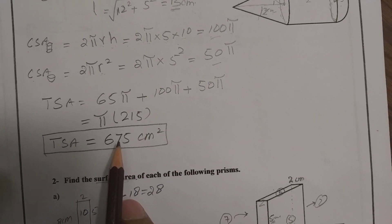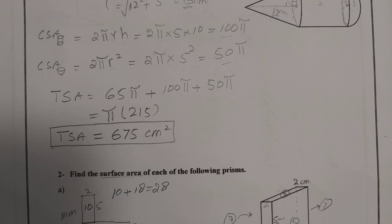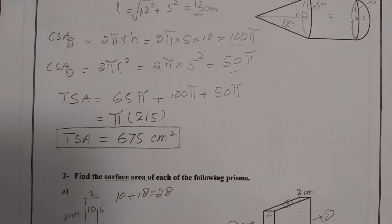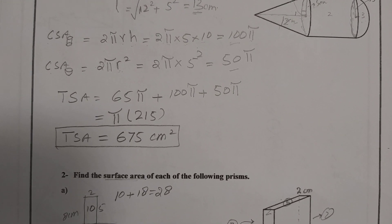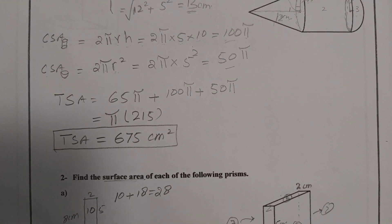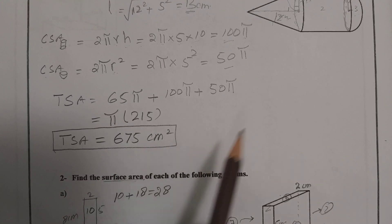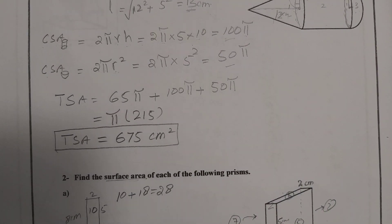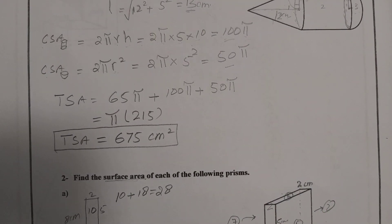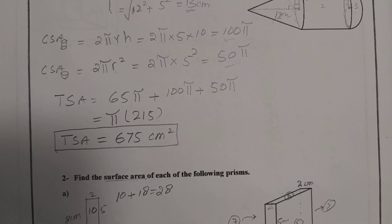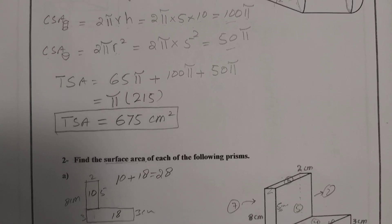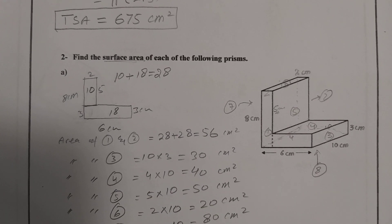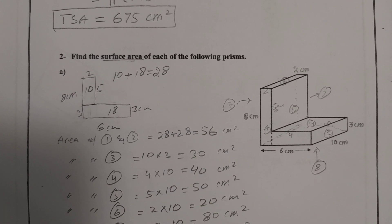Adding all the curved surface areas: 65π + 100π + 50π = 215π. Simplifying, the total surface area of the combined object is 675 cm².